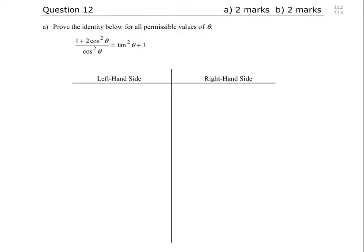Question 12. Prove the identity below for all permissible values of theta: 1 plus 2 cos squared theta over cos squared theta equals tan squared theta plus 3.